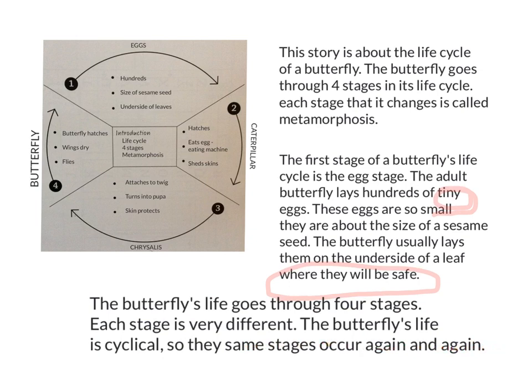So you're going to do your writing today using a cyclical map, but you will be writing about frogs. You will also have six paragraphs: an introduction, a paragraph about the first part of the frog life cycle, the second part, the third part, the fourth part, and then your last paragraph will be a summary.